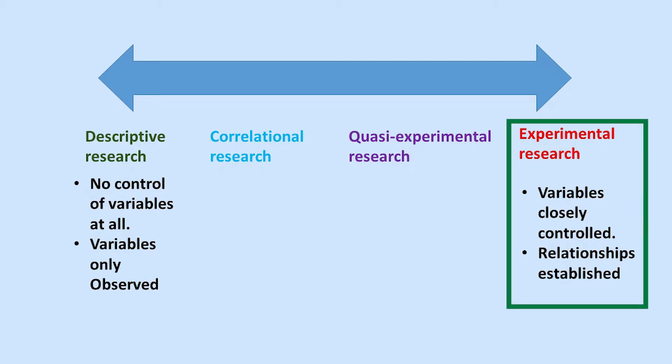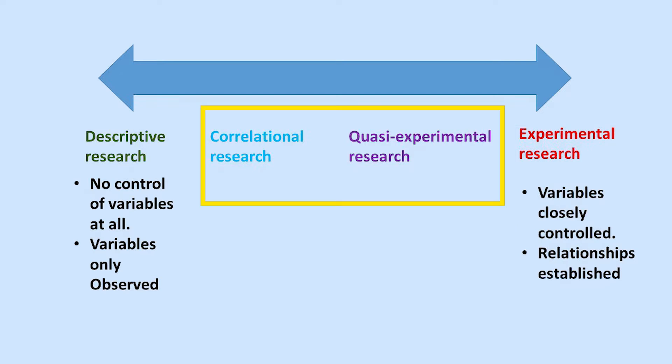In contrast, the other extreme will represent a design where variables are closely controlled and the relationships among these variables are established. The middle area of the continuum represents a blend between the extremes of not controlling variables — only observing them — and complete control of variables describing their relationships.